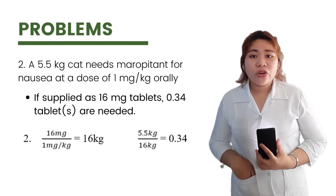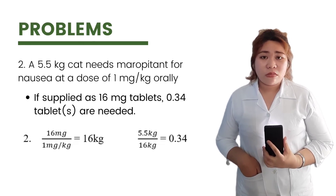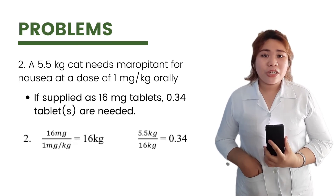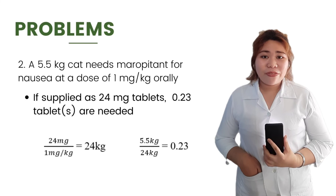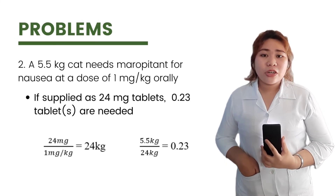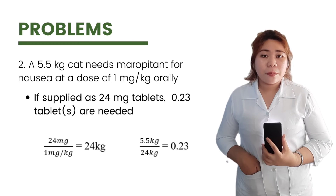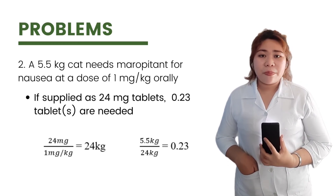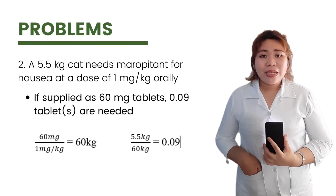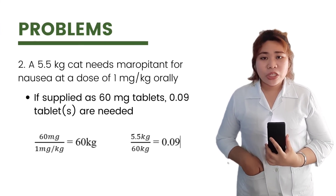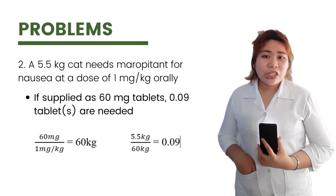For number 2, a 5.5 kg cat needs maropitant for nausea at a dose of 1 mg/kg orally. If supplied as 16 mg tablets: 16 ÷ 1 mg/kg = 16 kg; 5.5 ÷ 16 = 0.34 tablets. If supplied as 24 mg tablets: 24 ÷ 1 mg/kg = 24 kg; 5.5 ÷ 24 = 0.23 tablets. If supplied as 60 mg tablets: applying the same procedure gives 0.09 tablets. Therefore, if supplied as 60 mg tablets, 0.09 tablets are needed.